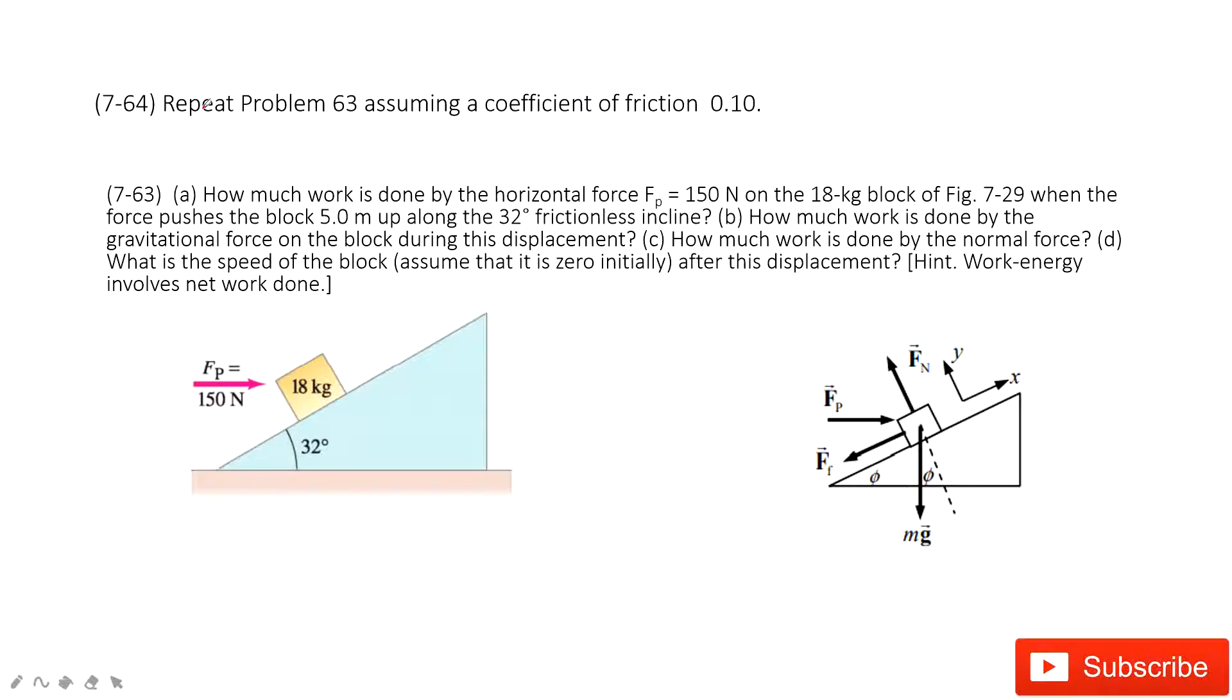In this one, we repeat the previous problems. Just consider there is friction. We can see we have the object. The mass is given, and the angle theta is also given. This object just stays on this slope. And then there is a force acted by the person, which is given.